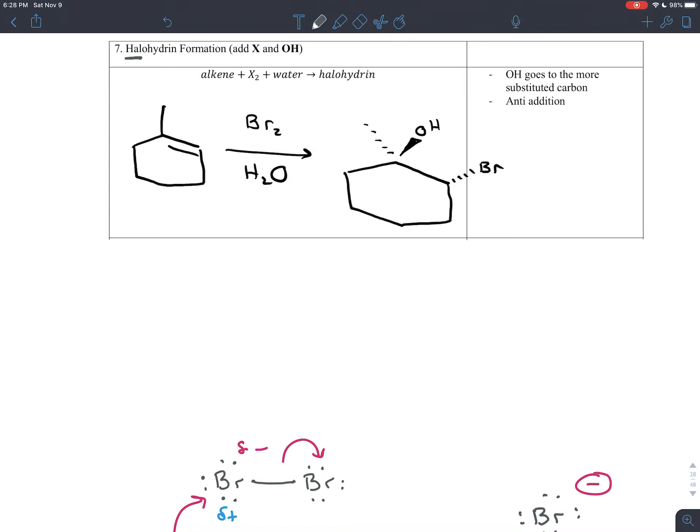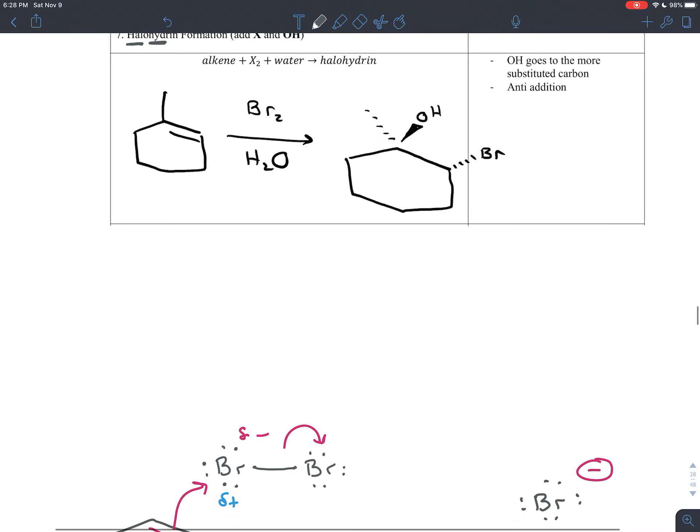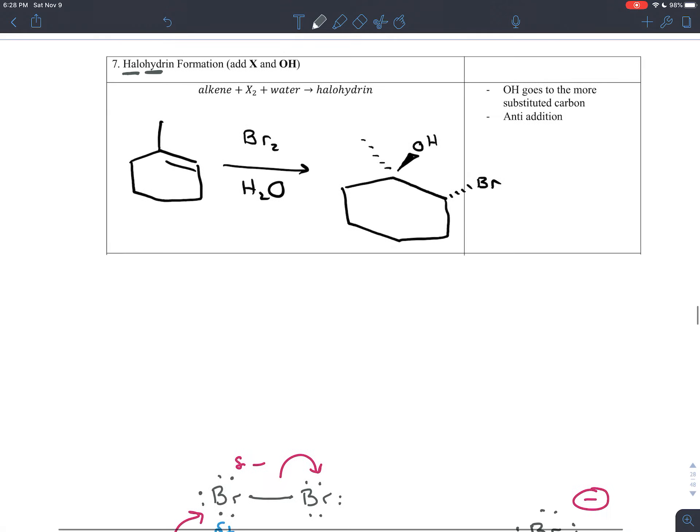The second thing you're adding is water and that's the hydrin part of halohydrin formation. Like if you hydrate you drink a lot of water, so here halohydrin formation is where you add a halogen and water. The water molecule ends up losing one of its hydrogens. It basically replaces a bond to one of the hydrogens with a bond to a carbon, so effectively the two things you're adding is a halogen and an OH, the OH coming from the water.